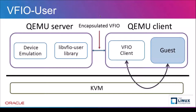We changed the existing VFIO client to encapsulate these IOCTL commands and send them to the server over a socket. On the server side, we use a library developed by Nutanix that can process the encapsulated VFIO commands and provide a standardized API for use by device emulation programs. We then changed our QEMU server to use that VFIO libvfio-user API to communicate with the client QEMU. As with our original concept, the QEMU device emulation code remains completely unchanged.